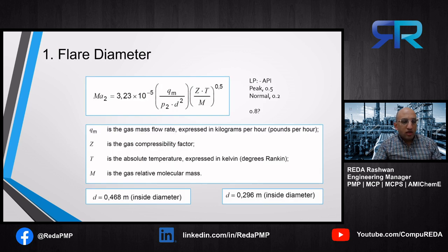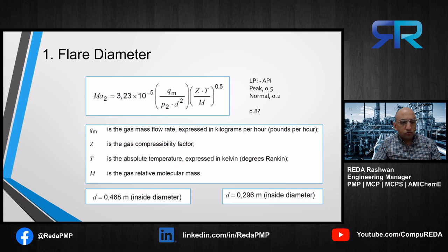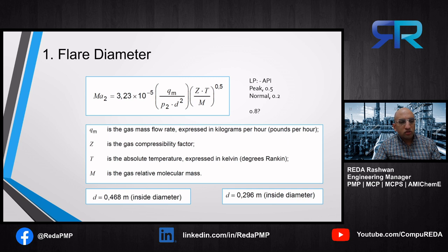The first step is to calculate the flare diameter using this equation. We need the flow rate of the gas, the pressure, the compressibility factor, the temperature, and the molecular weight. For the Mach number, the API states that for low-pressure subsonic flares, we use 0.2 for normal operations and 0.5 as a peak. These numbers are a little conservative from the API, so you will easily find in the field Mach numbers up to 0.8. But per the standard, 0.2 for normal and 0.5 as a peak, except if the manufacturer of the flare stack and local regulations allow a higher Mach number.